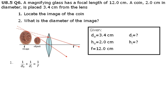For the first question, we first write down our equations. 1 over the distance of the object, plus 1 over the distance of the image, equals 1 over the focal length.